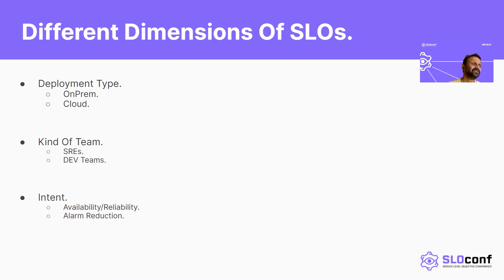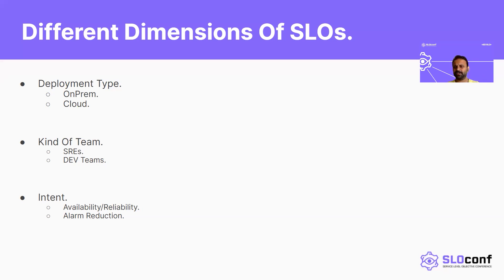The second dimension is the kind of team that you are, which depends on the SLO you're looking at. If you are an SRE, you would manage the infrastructure plus the cloud platform — that's one type of SLO. If you're a dev or DevOps team, you would typically look at workloads or applications and do a different type of SLO. Also, the intent matters: are you doing it for availability, reliability, or alarm reduction? I'll tell you about an interesting case of how SLO was used for alarm reduction.